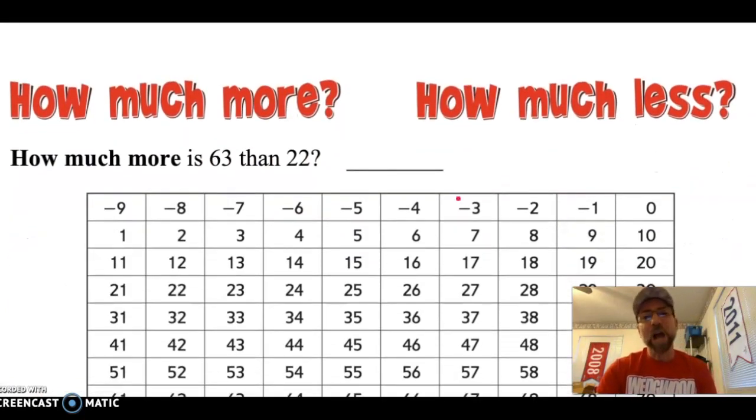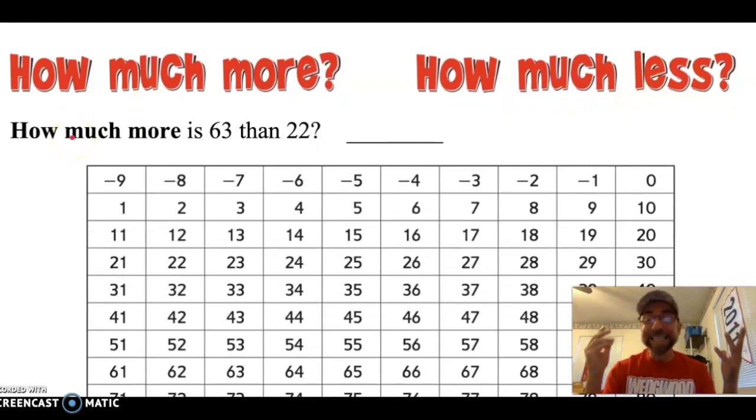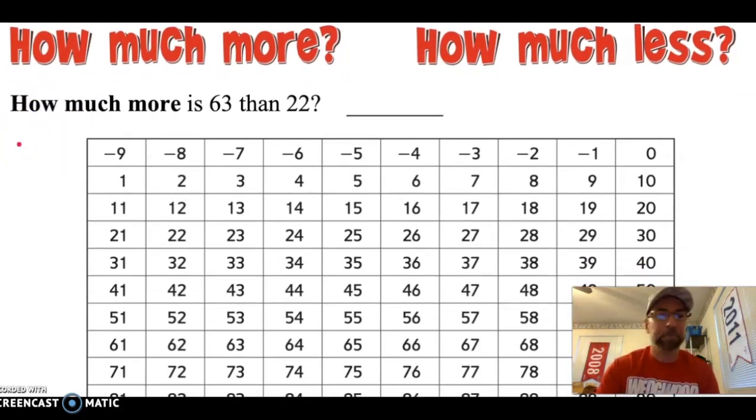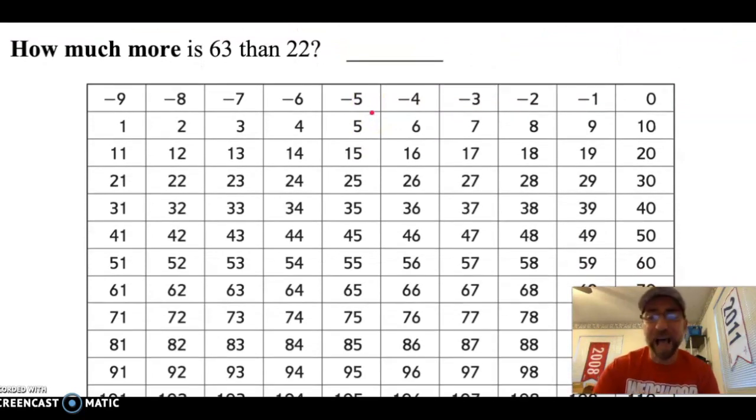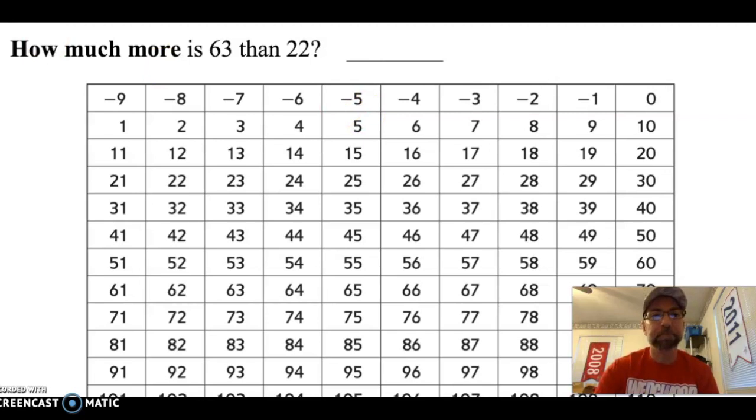All right. Let's try how much more and how much less. They mean exactly the same thing. Find the difference. Go ahead and try this one on your own. How much more is 63 than 22? Go ahead and hit the pause button and try and solve this problem. Hopefully the first thing that you did was to circle both of those numbers. And then count your tens. 10, 20, 30, 40 plus 1 gives me 41. Thumbs up if you got 41.